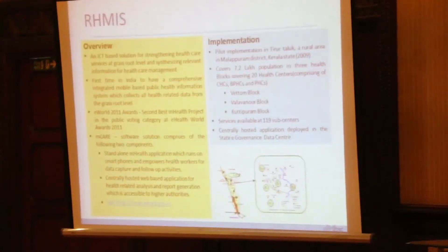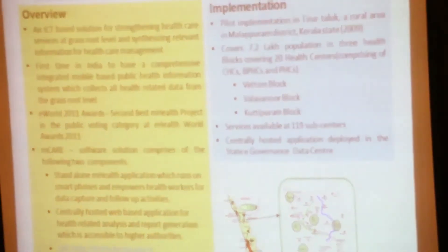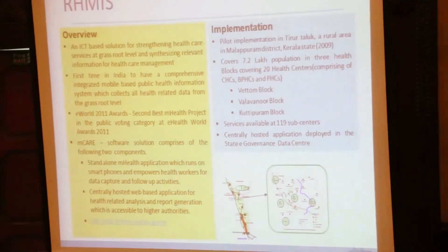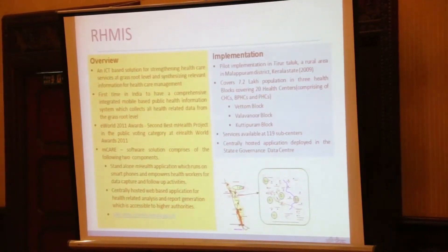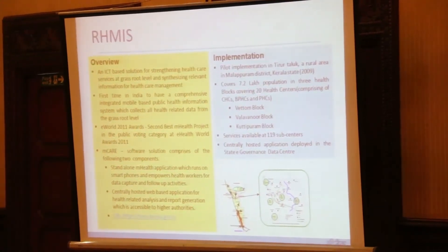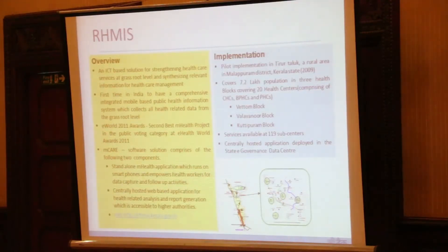This project was implemented in Tirul Taluk, a rural area of Malappuram district in Kerala in 2009, which covers 7.2 lakhs of population in three blocks containing 20 health blocks — including CSC, community health centres, block primary health centres, and primary health centres — namely Vettum block, Valavannu, and Kutipuram. The main services are done at 190 subcentres and the centrally posted application is deployed in the Kerala State Data Centre.